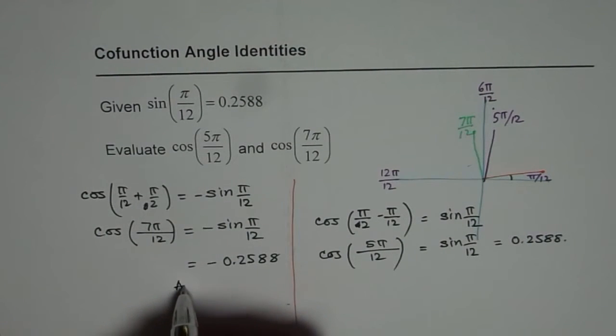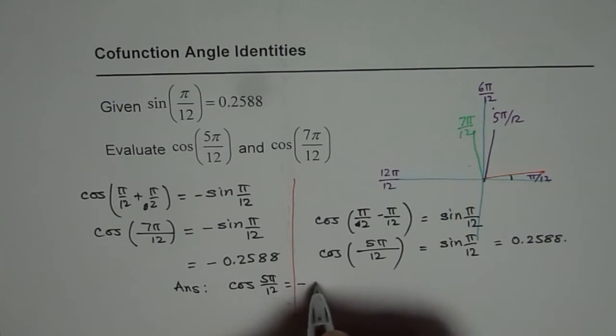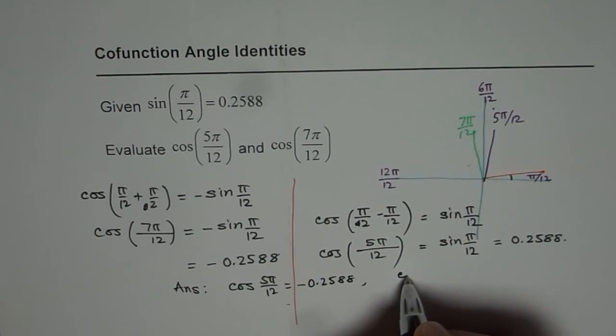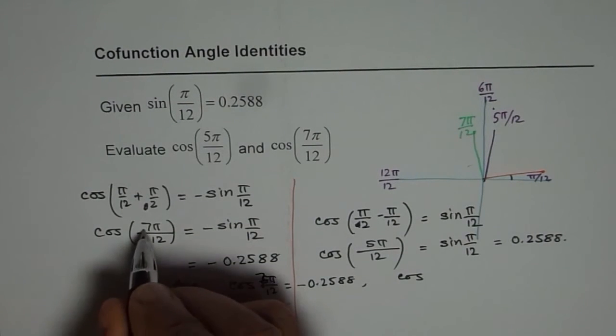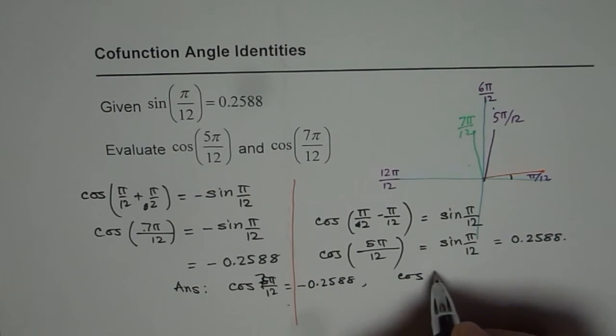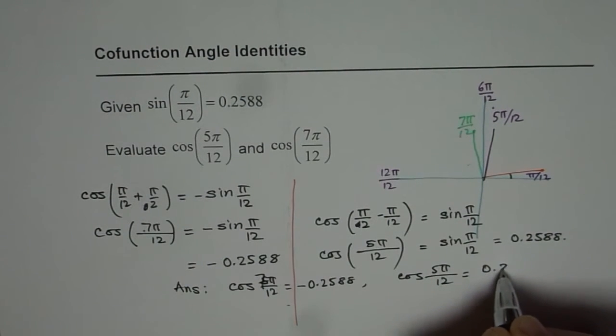So from here we get our answer and that is cos of 5π/12 is equals to negative 0.2588, while cos of 5π/12 is equal to positive 0.2588.